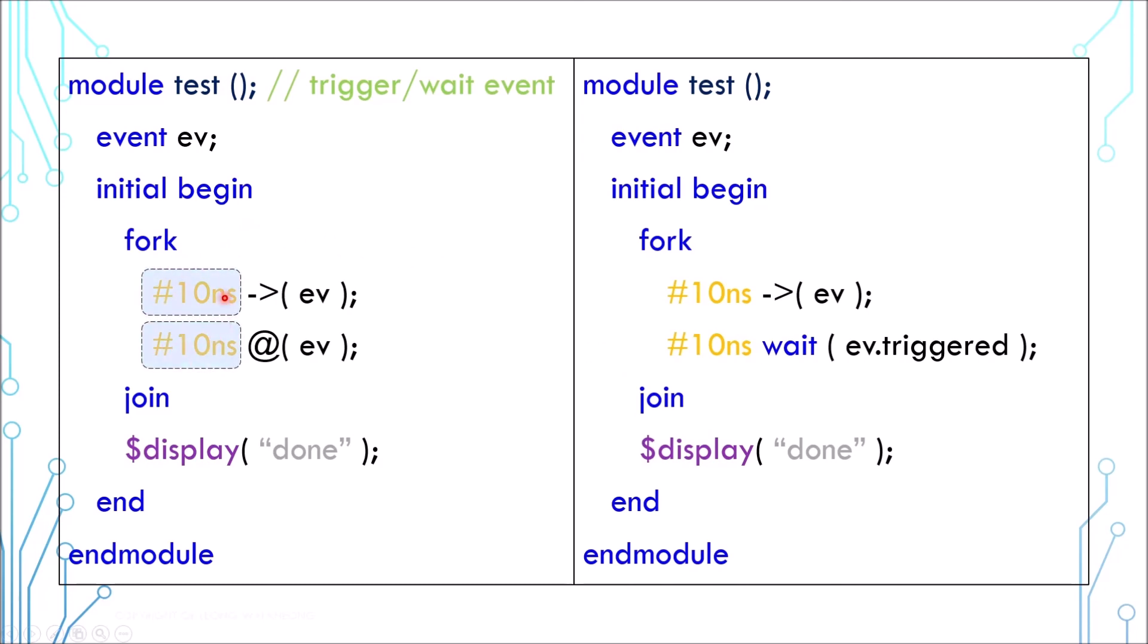Now this is an interesting example where blocking and triggering happen at the same time. First, this is a race condition. Second, even though they happen at the same time from a simulation perspective, one has to happen first and then the other follows.